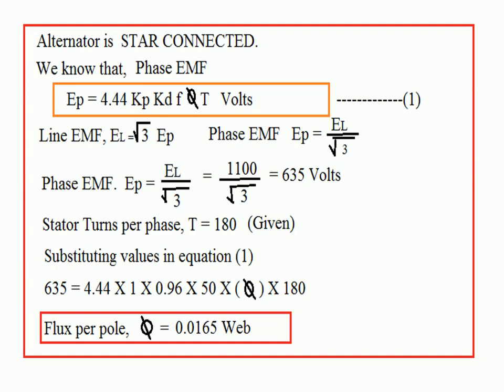Another data given: stator turns per phase T = 180. Substitute all values in equation: Ep = 4.44 × Kp × Kd × F × φ × T. You have to calculate flux per pole φ. Very carefully substitute Ep = 635 volts (the phase EMF, converted from the given line EMF — this is very important and asked many times for 8 marks). We get flux φ = 0.01 webers.